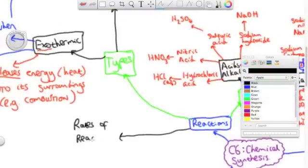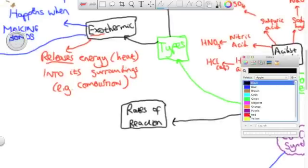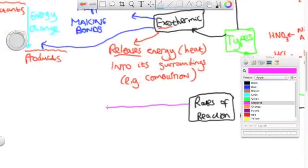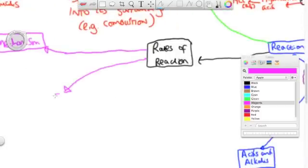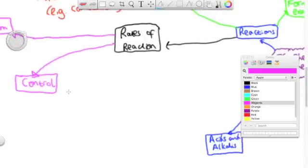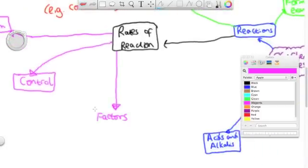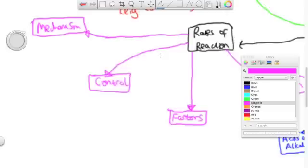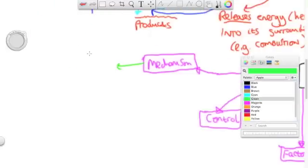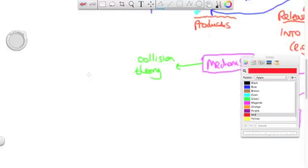Now let's look at the rates of reaction. We'll look at the mechanism of reactions, why reactions must be controllable, the factors affecting the rate of reaction, and how to observe the rate of a reaction. So, mechanisms.